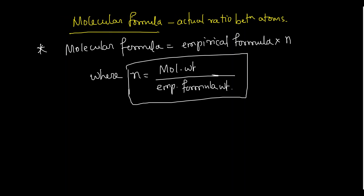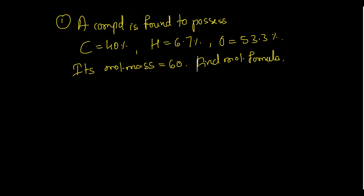Next: molecular formula. The actual ratio between atoms is given by the molecular formula. Molecular formula = empirical formula × n, where n = molecular weight ÷ empirical formula weight. Example: a compound has carbon 40%, hydrogen 6.7%, oxygen 53.3%, and molecular mass 60. Find the molecular formula — first put the table and find the empirical formula.